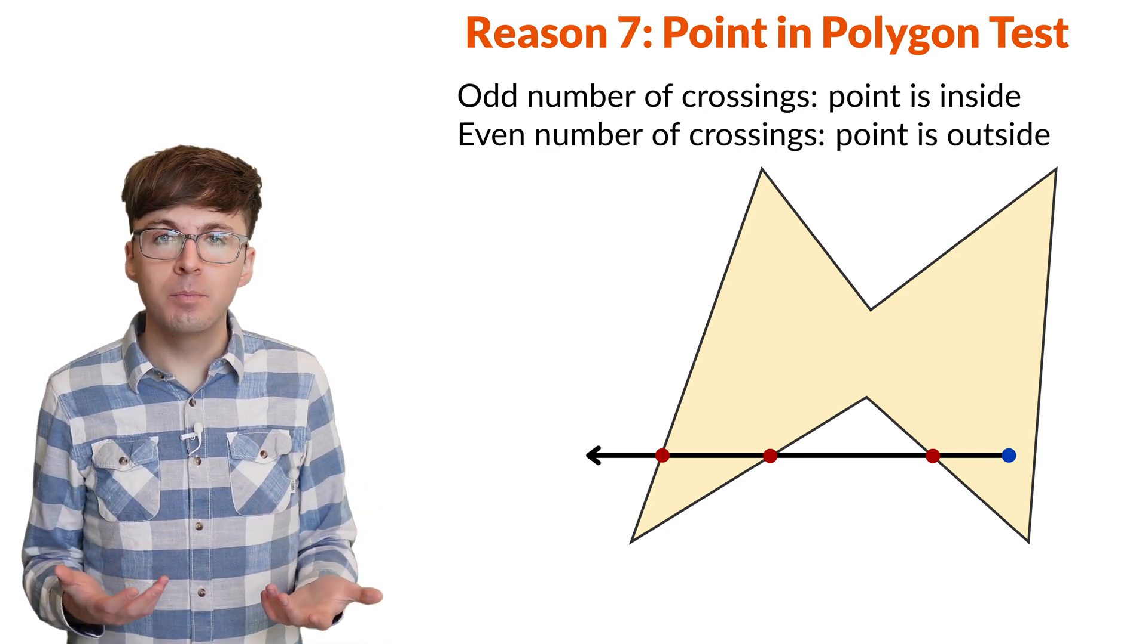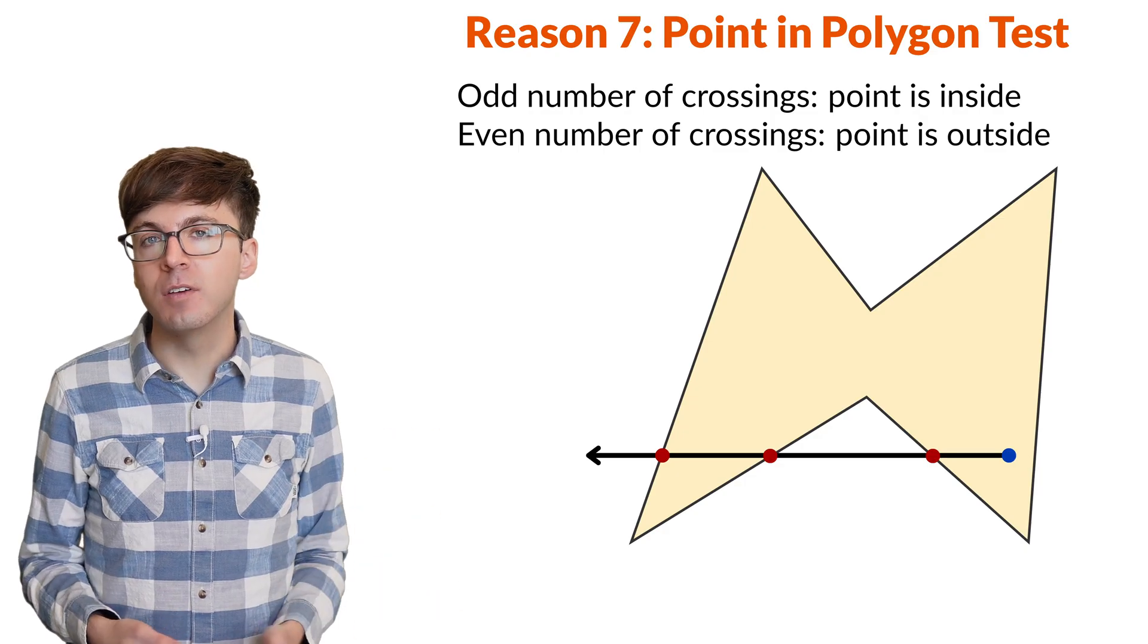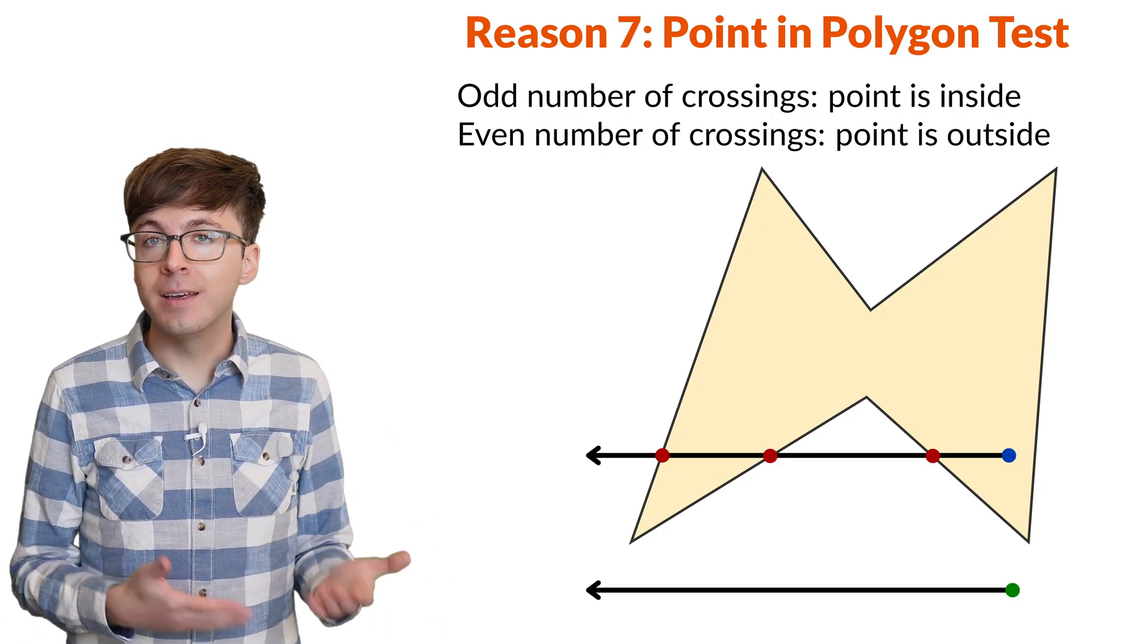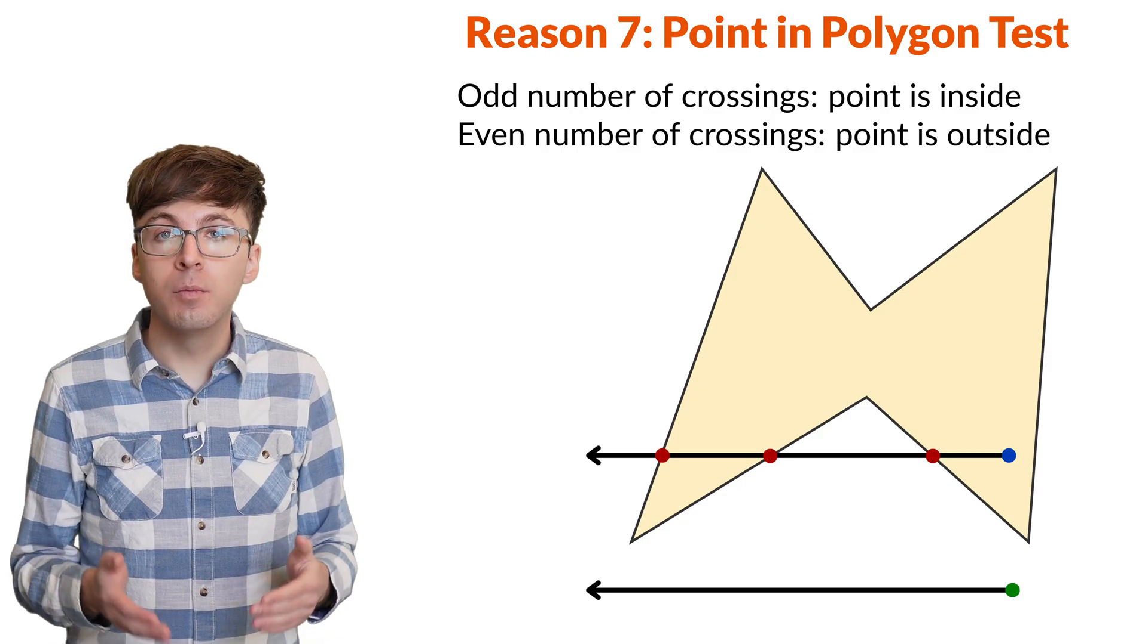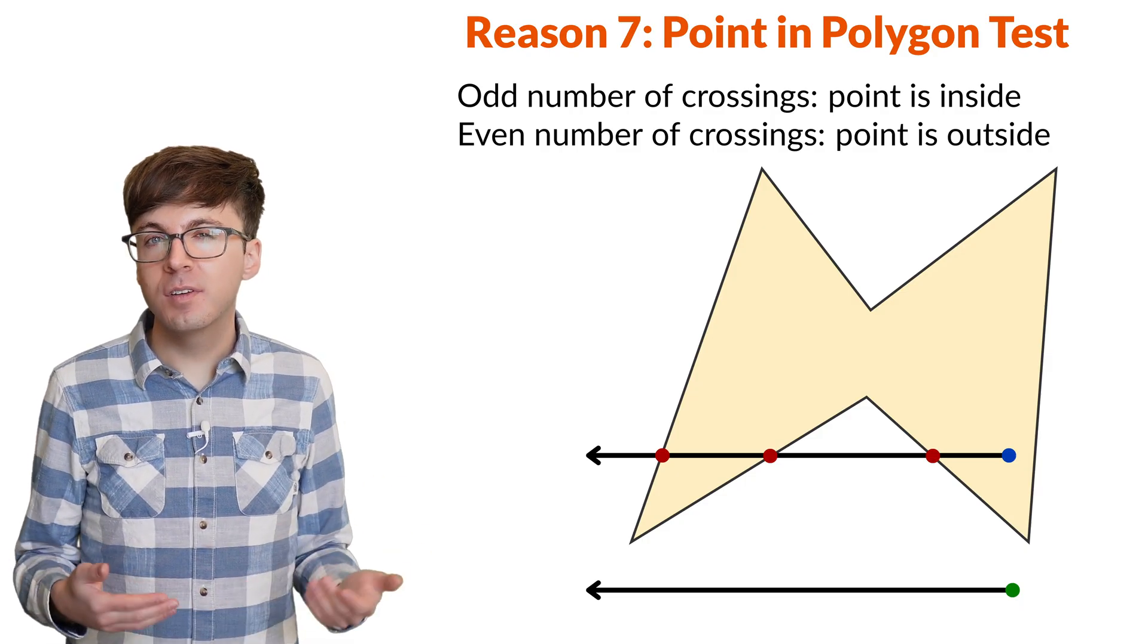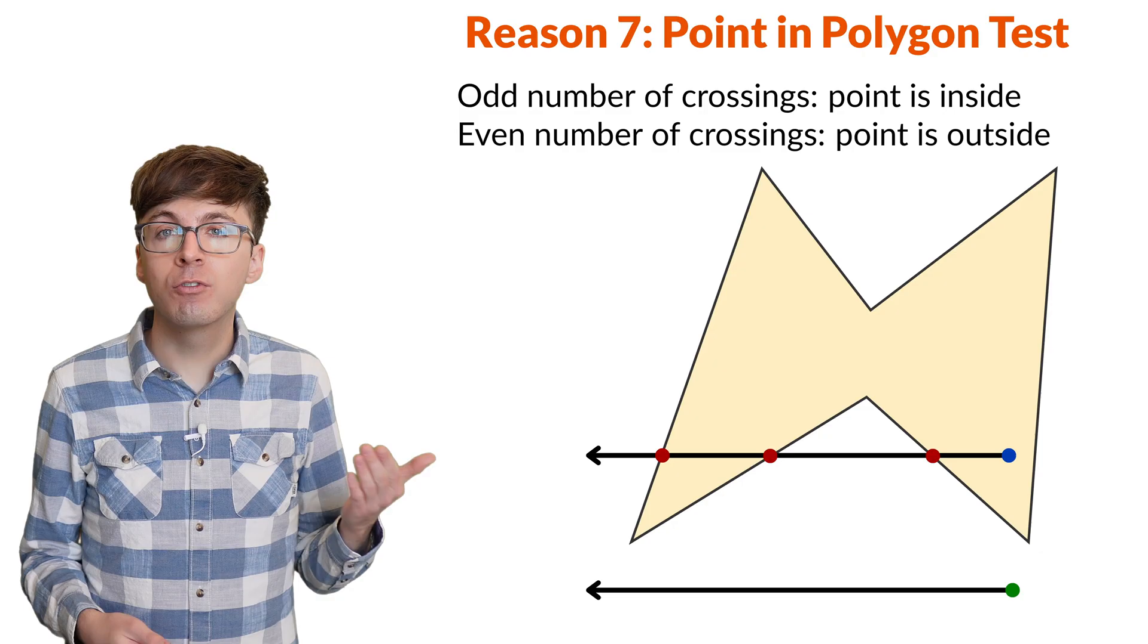This is a nice test, but it requires 0 to be even. If there are no crossings at all, then the ray never went inside the polygon, so the point is outside. For the test to work in this case, 0 should be even.